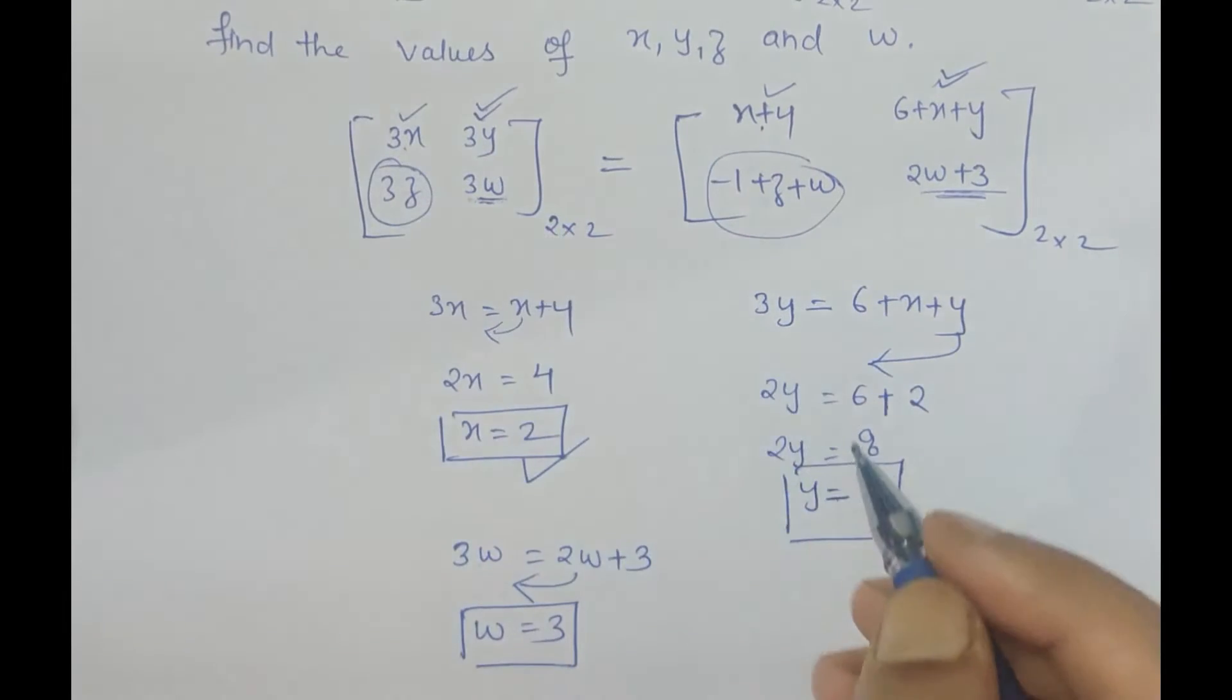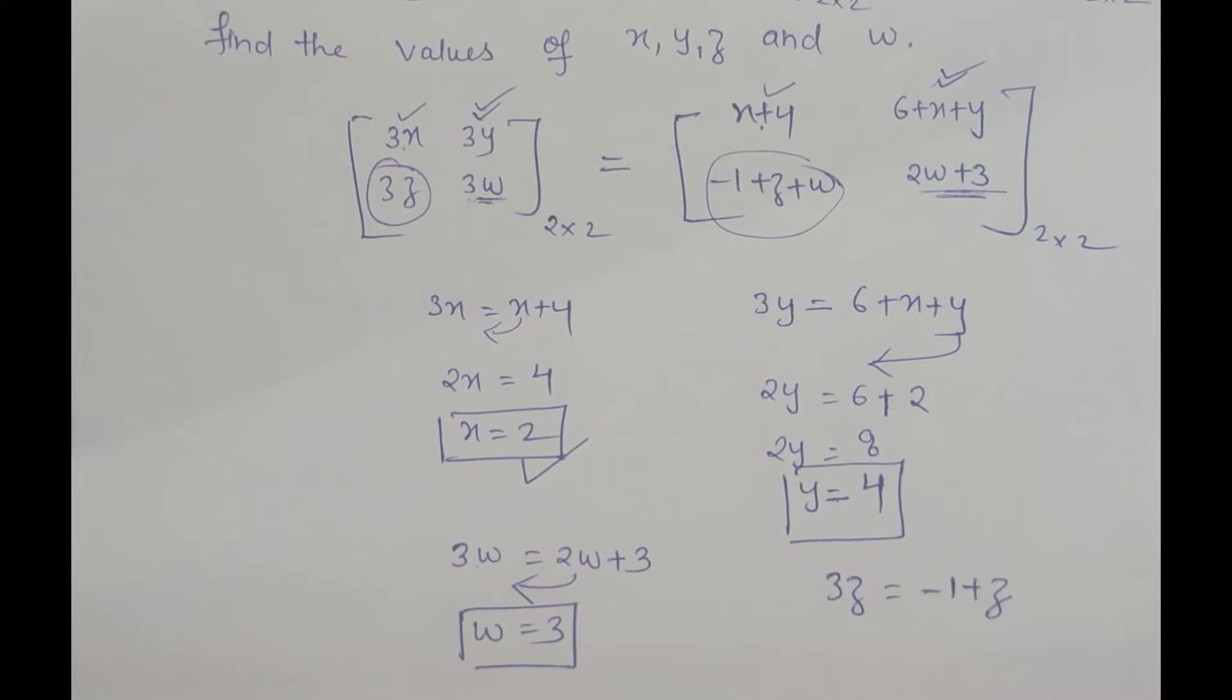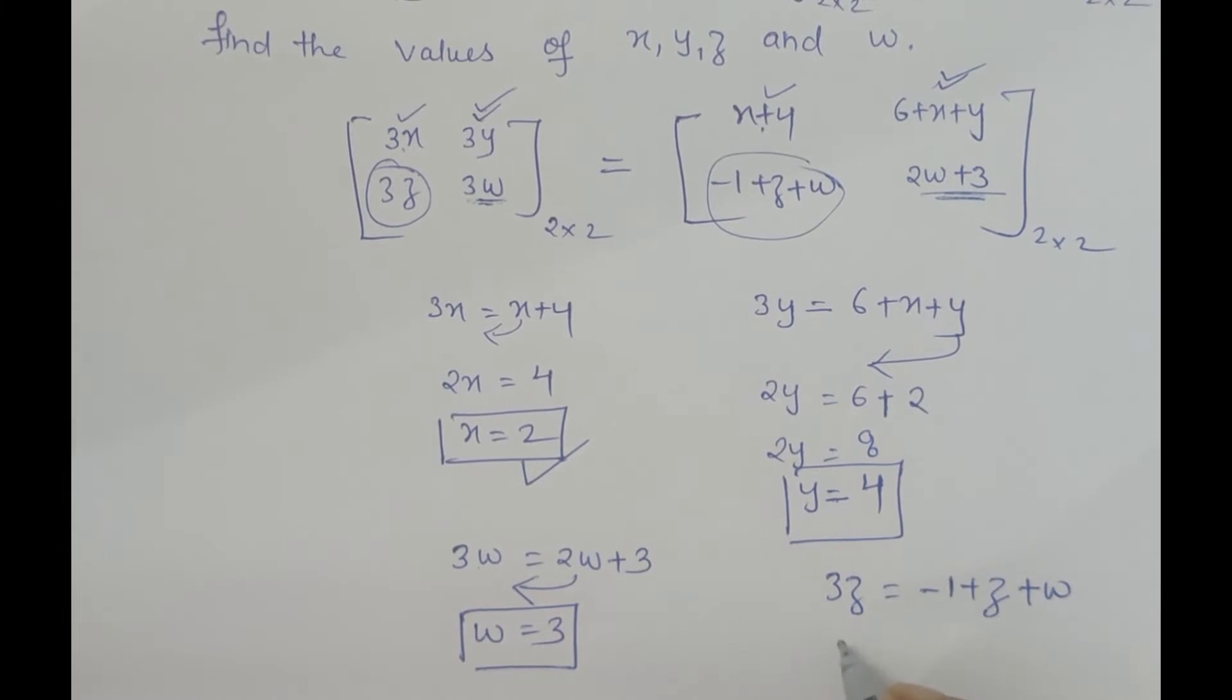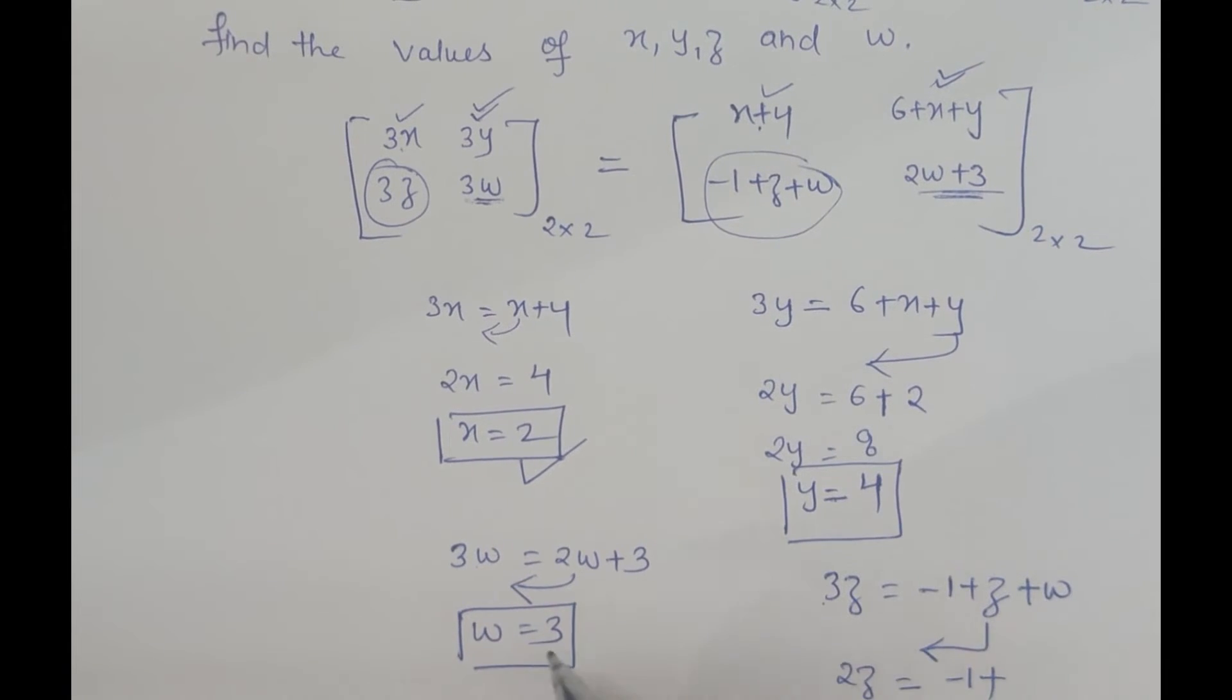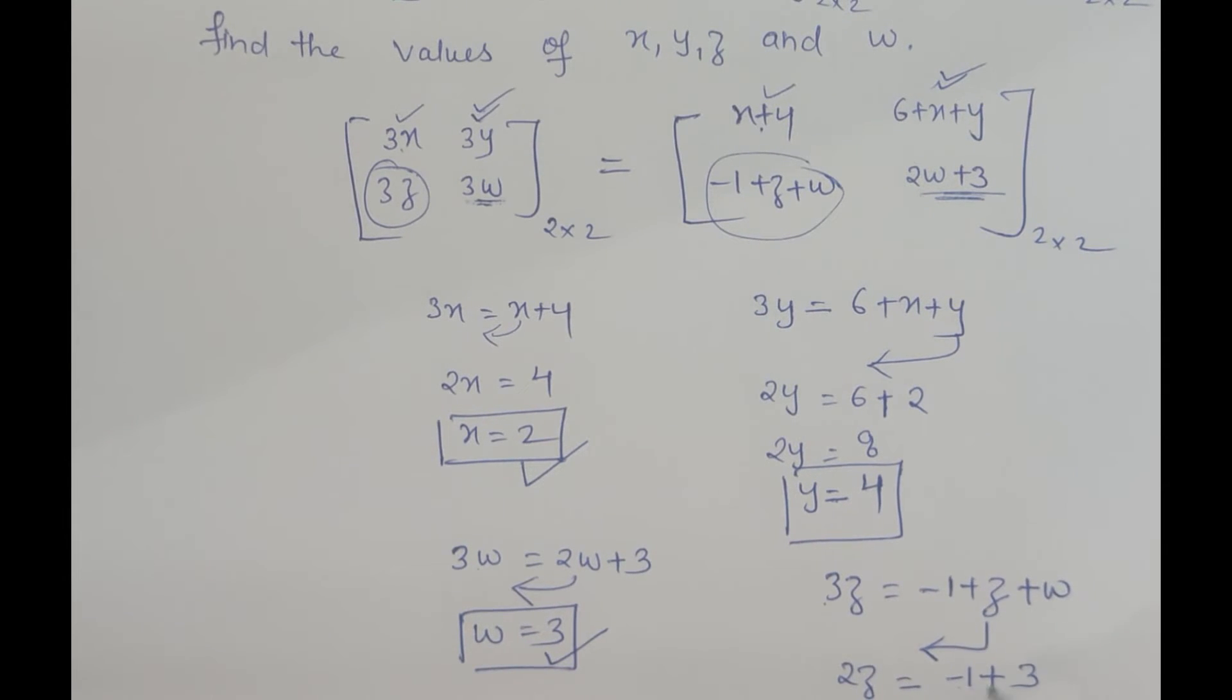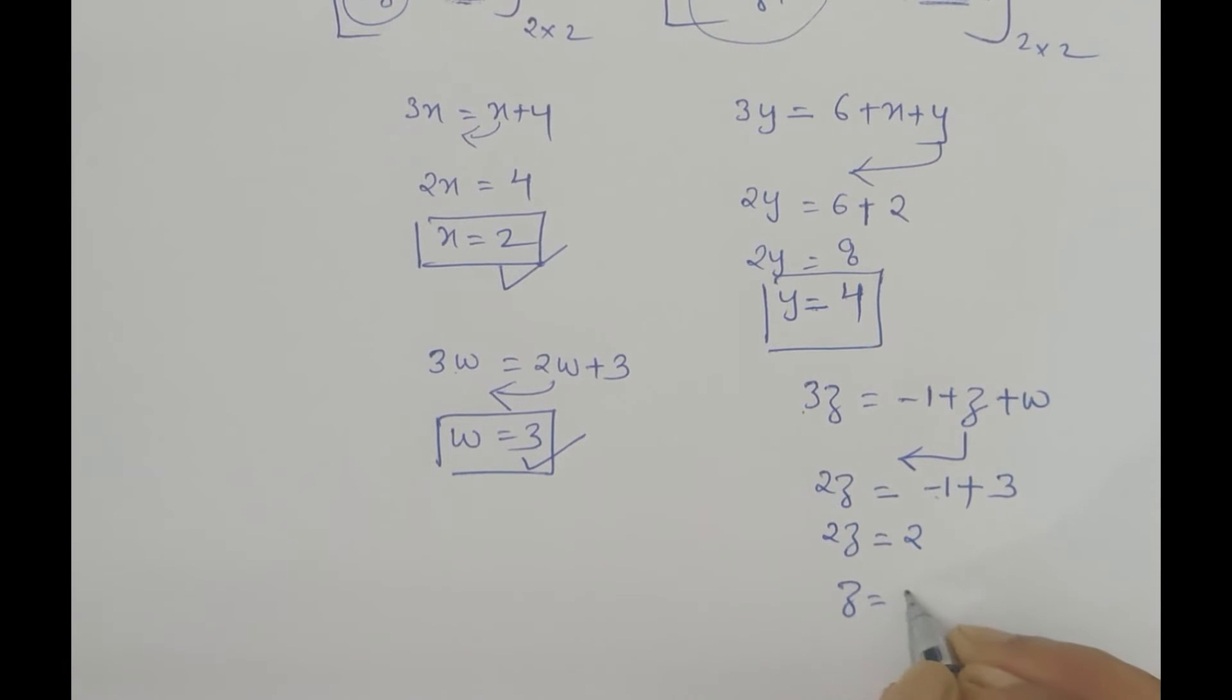The last thing left is z. Let's compare these elements: 3z equals minus 1 plus z plus w. When I shift z to the left side, 3z minus z is 2z, which equals minus 1 plus w. We already have w value as 3, so 2z equals minus 1 plus 3, which is 2. Therefore z equals 2 divided by 2, which is 1.